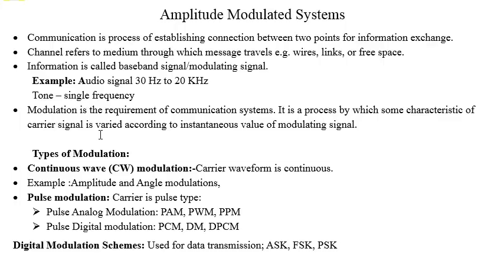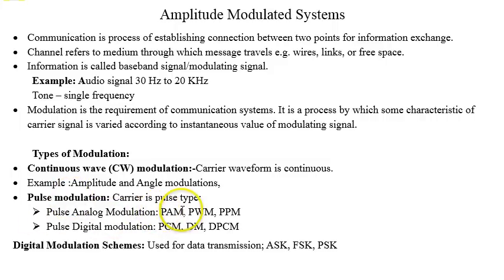There are different types of modulations used in communication systems. Continuous wave modulation, or CW modulation, uses a continuous carrier waveform — examples are amplitude and angle modulation systems. The next is pulse modulation, where the carrier is pulse-type. Pulse modulation can be divided into pulse analog modulation systems like PAM (pulse amplitude modulation), PWM (pulse width modulation), and pulse position modulation, where variations in amplitude, width, or position are continuous.